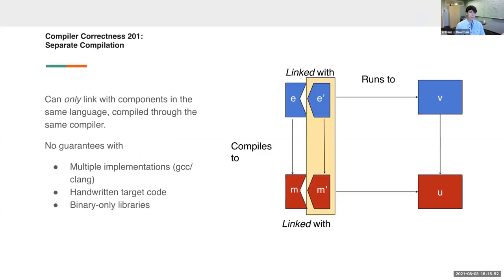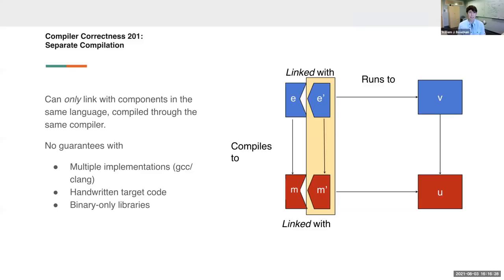The limitation is that we only get guarantees when linking with components compiled by the same compiler. Both e and e-prime need to exist in the source language, so we have no way to talk about linking with a binary-only library or handwritten target code. This doesn't scale to how C is often used — with multiple compiler implementations, binary-only libraries, or even handwritten assembly — where you still want correctness guarantees.